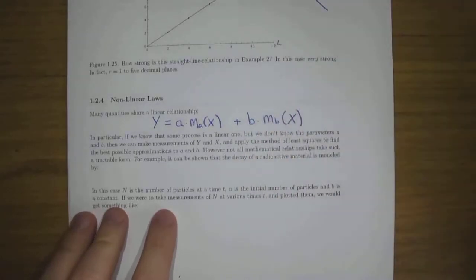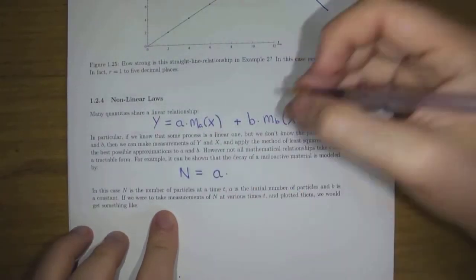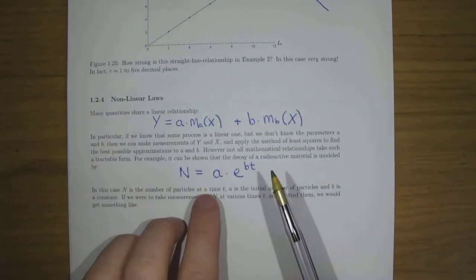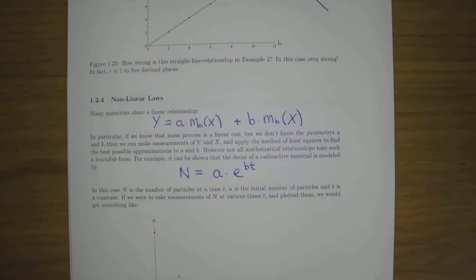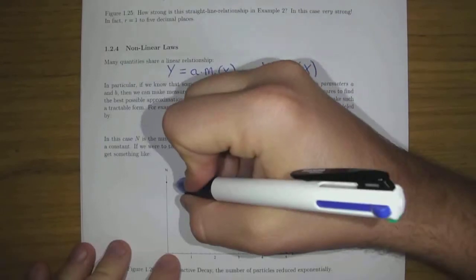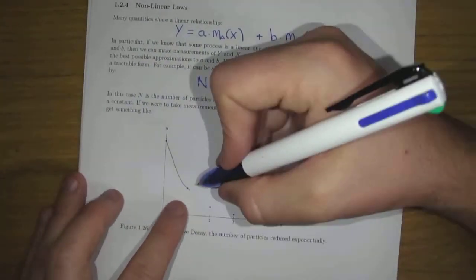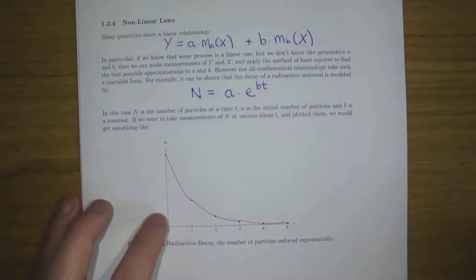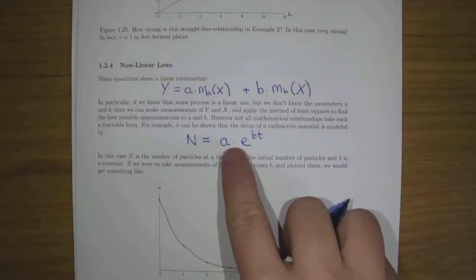For example, radioactive decay: it can be shown that the number of particles at time t is equal to a·e^(bt). Here, rather than addition you have multiplication, and rather than multiplication by a constant you've got a power. Here N is the number of particles at time t, a is the initial number of particles, and b is a decay rate constant. If you take measurements of N at different times and plot them you get a curve. Suppose you still want to measure b — how do you fit a curve when it's not in linear form?